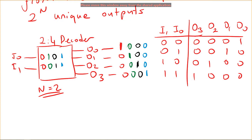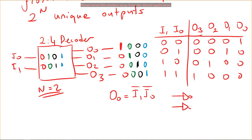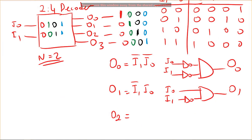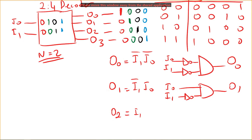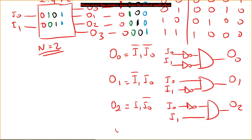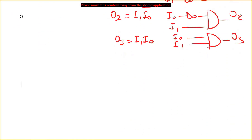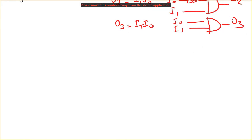Output zero equals i1-not AND i0-not, so we need two inverters and an AND gate. Output one is i1-not AND i0. Output two is i1 AND i0-not. Output three is i1 AND i0. Each output is implemented with the corresponding AND gate and inverters.